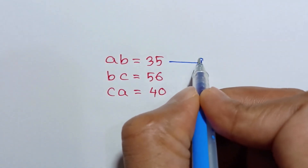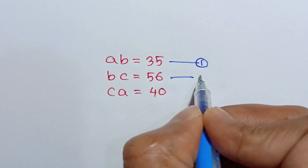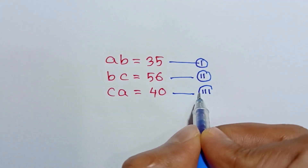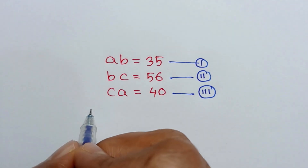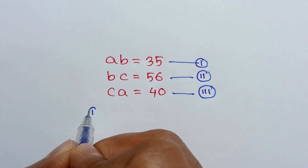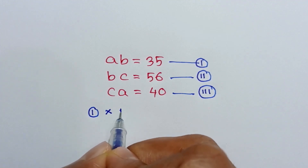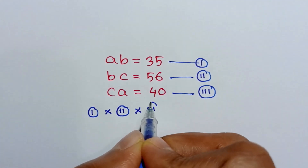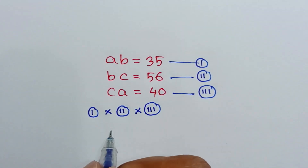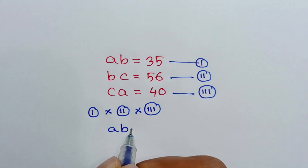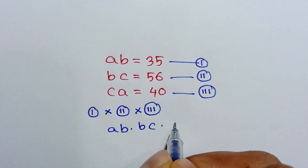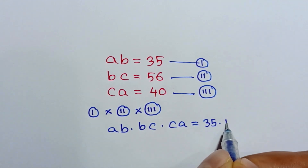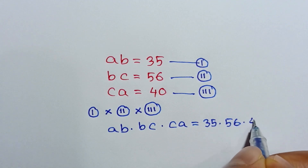Let's call these equation number 1, equation number 2, and equation number 3. Now if we multiply equation 1 by equation 2 by equation 3, we will have ab times bc times ca is equal to 35 times 56 times 40.